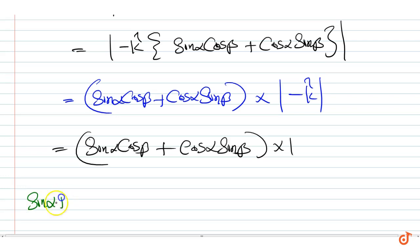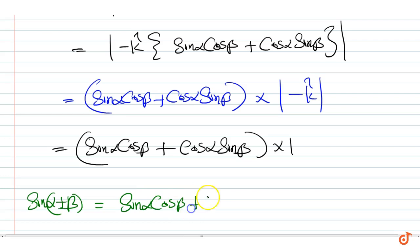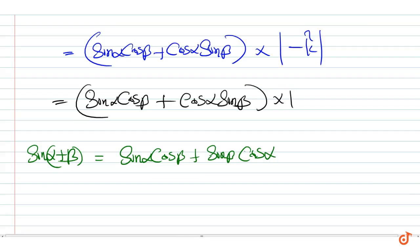Therefore, we can write sin(alpha + beta) equals sin alpha cos beta plus sin beta cos alpha. That is our proof.